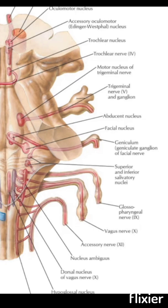Next we'll see the deep origin or the nuclear origin. First is the motor nucleus — the motor nucleus of the facial nerve. It is situated in the caudal part of the pons, below and in front of the abducens nerve nucleus.